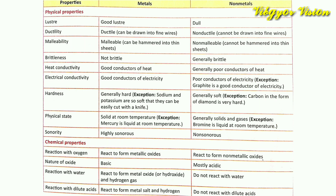Next property is ductility. Metals are ductile, non-metals are non-ductile. Next physical property is malleability — metals are malleable but non-metals are non-malleable. Next property is brittleness: metals are not brittle, but non-metals are generally brittle.